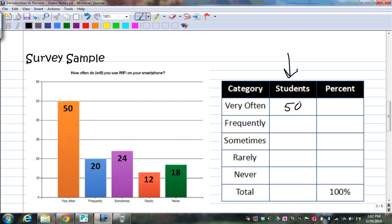So very often we had 50. Frequently we had 20. Sometimes we had 24. Rarely we had 12. And then never we had 18. What you want to do is you want to add up this category. When you add it up, you get 124.